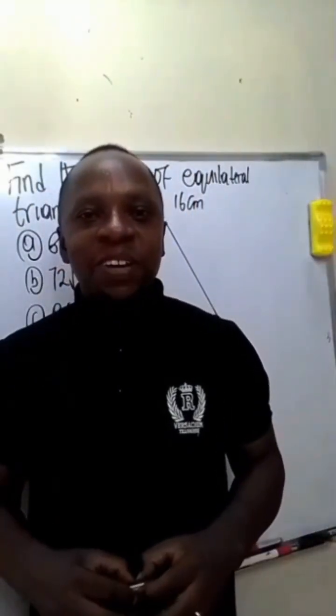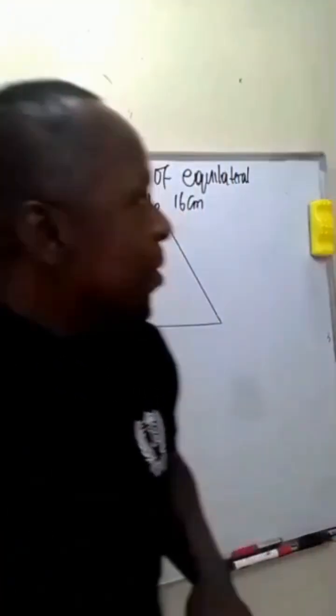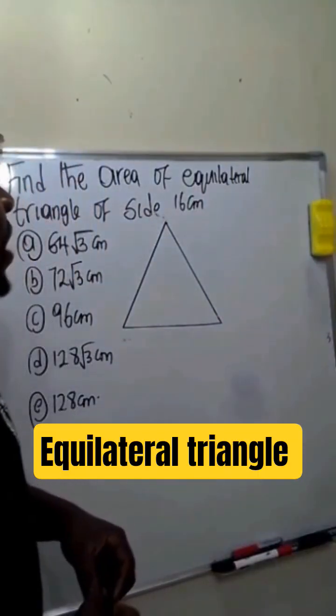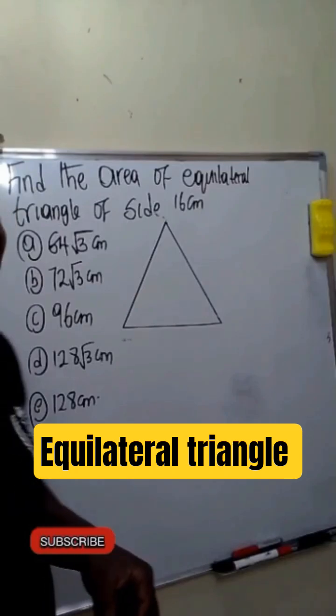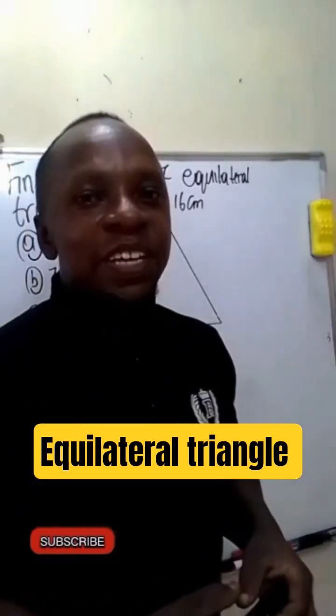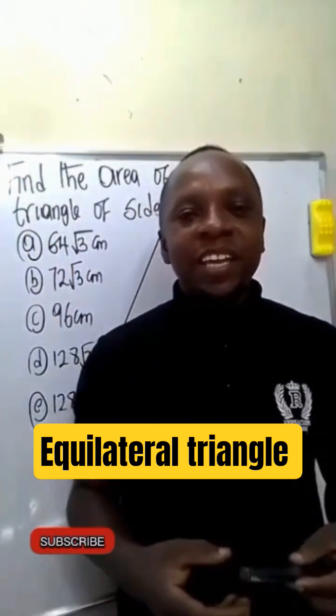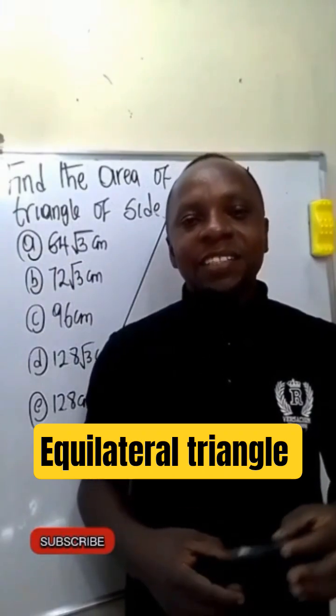Hello, today we will be finding the area of an equilateral triangle. We are asked to find the area of an equilateral triangle of side 16 cm. An equilateral triangle is simply a triangle with three equal sides and three equal angles.